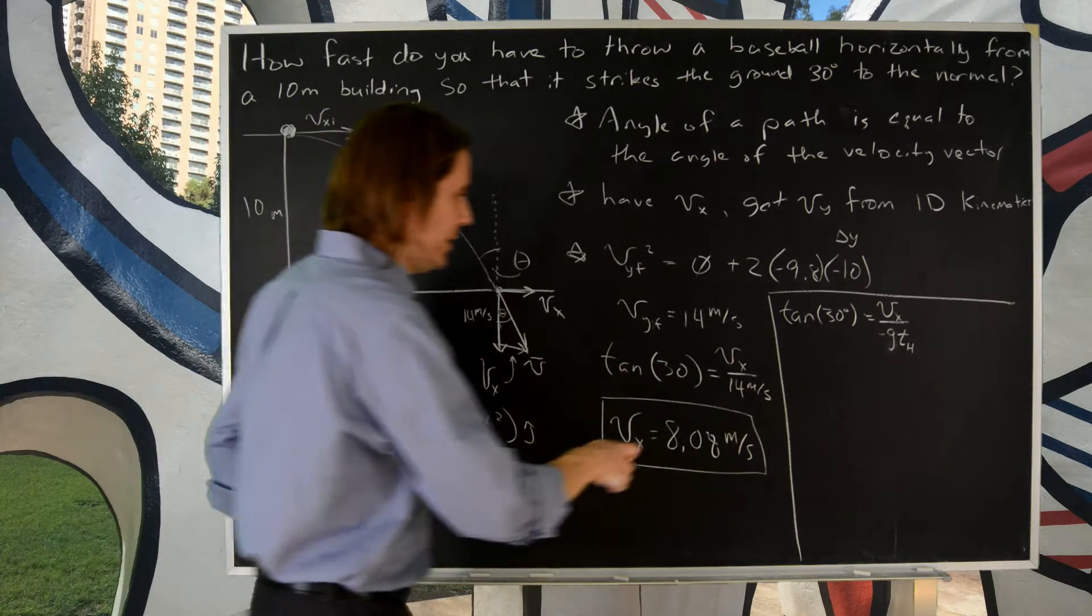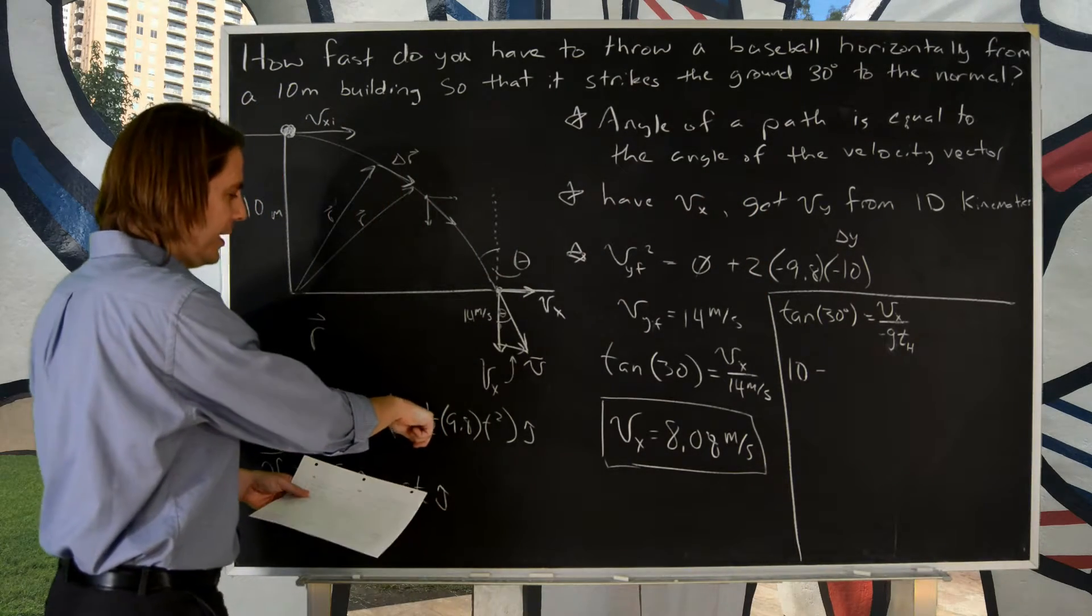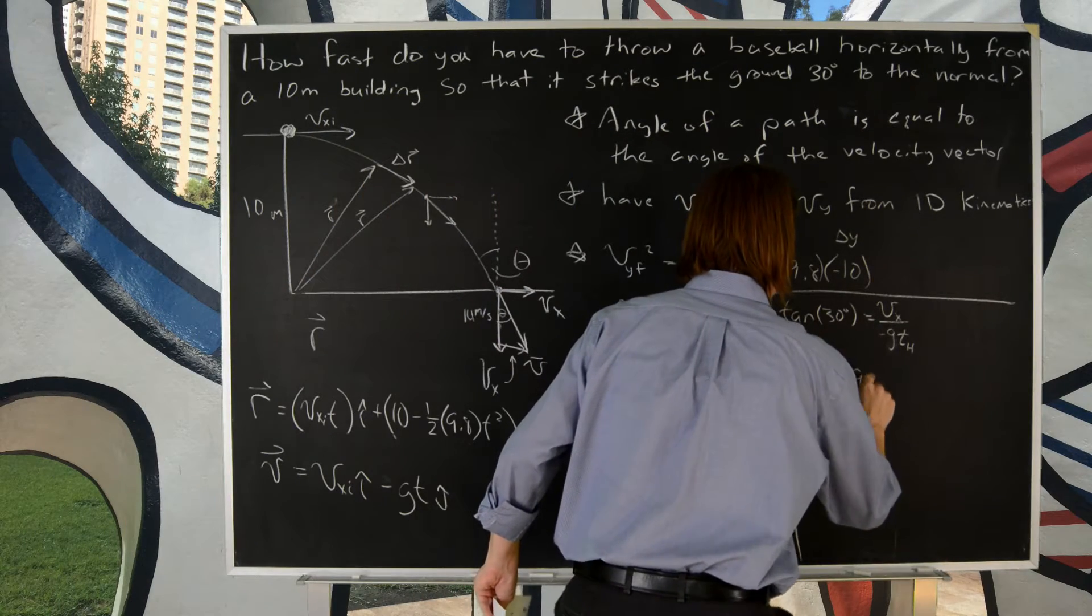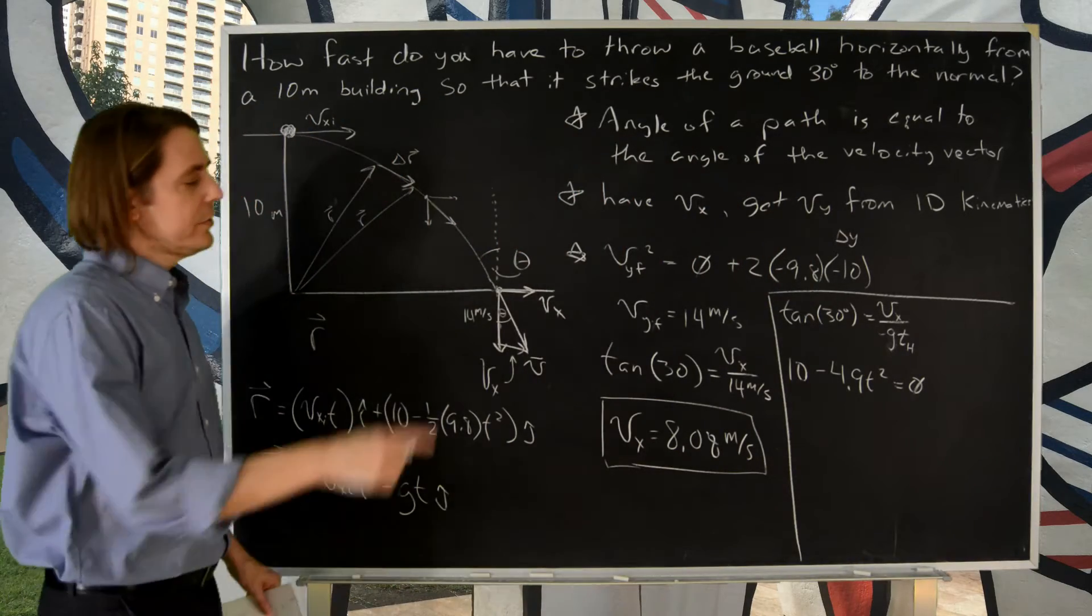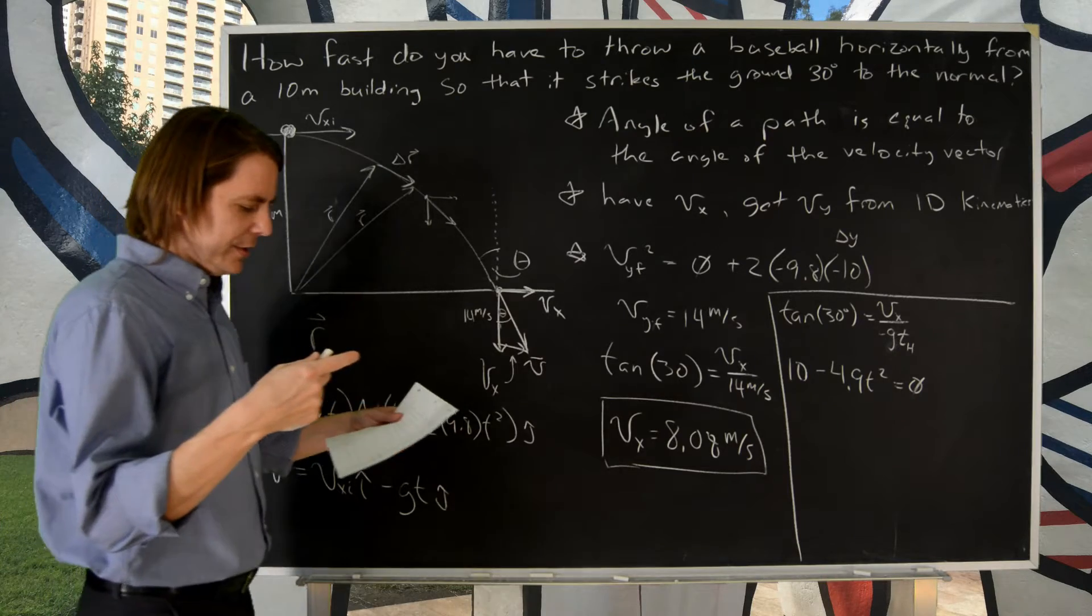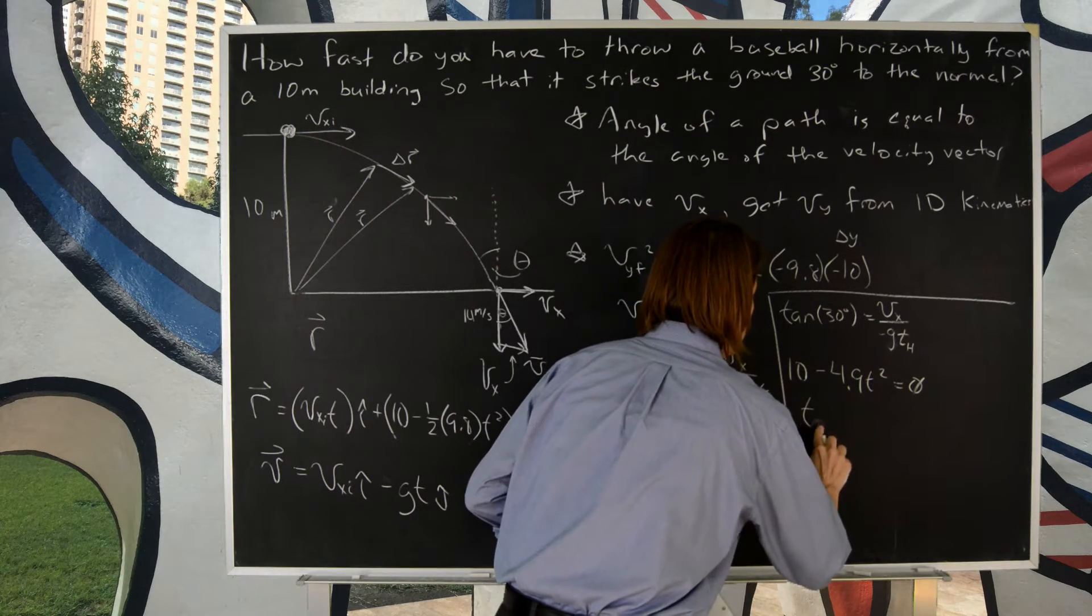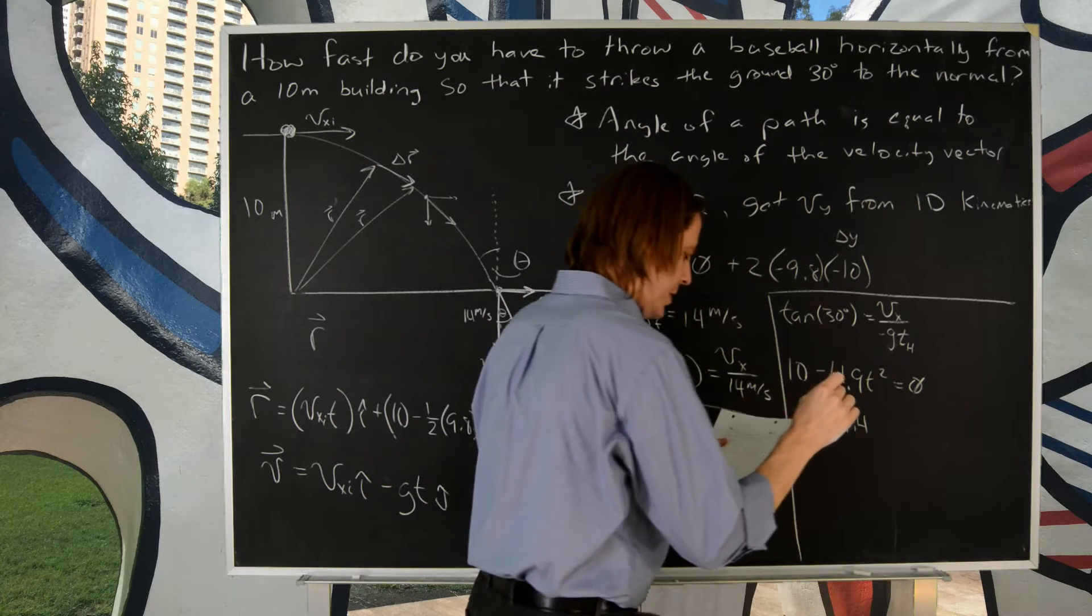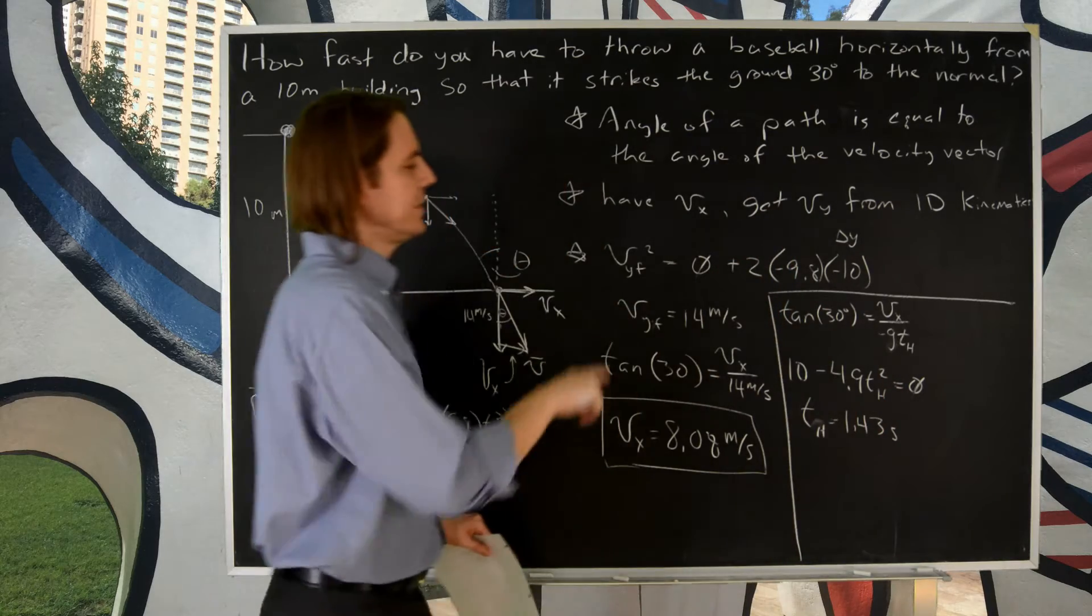So you say, okay, 10 minus 4.9 t squared equals zero. So 10 divided by 4.9, that's about 2. Square root - you get that the t hit is about 1.43 seconds. And I should put t hit there too, because that's the time it's at zero.